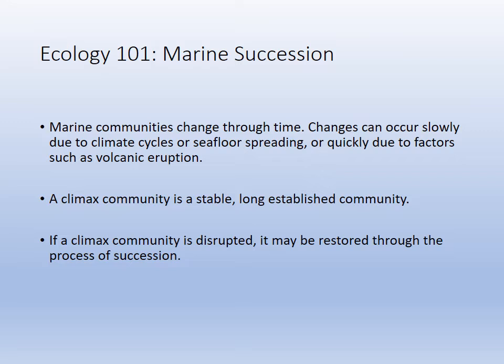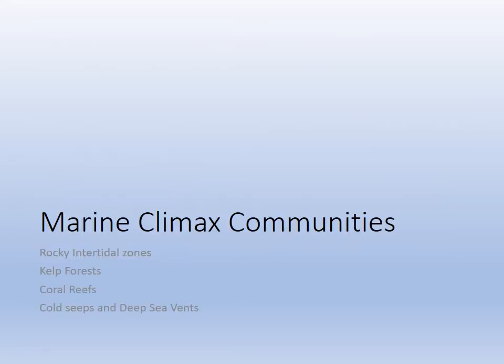Succession is the natural change of an ecosystem over time. Most succession we look at is secondary — the recovery of an ecosystem. Primary succession is from scratch, such as volcanic islands. When things level off, that's called a climax community: sustainable, stable, long-established. Climax communities in the ocean include the rocky intertidal, kelp forest, coral reefs, cold seeps, and deep sea vents, spanning ecosystems from around the world.